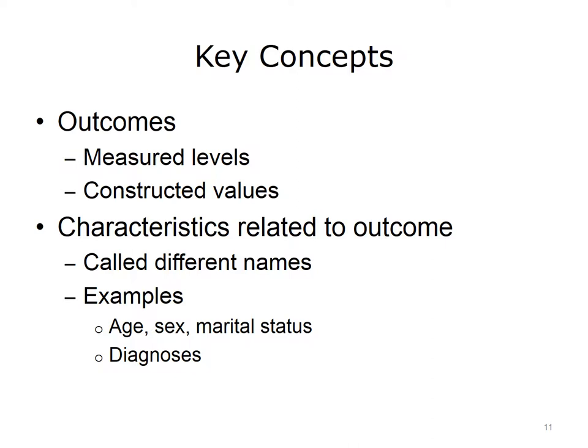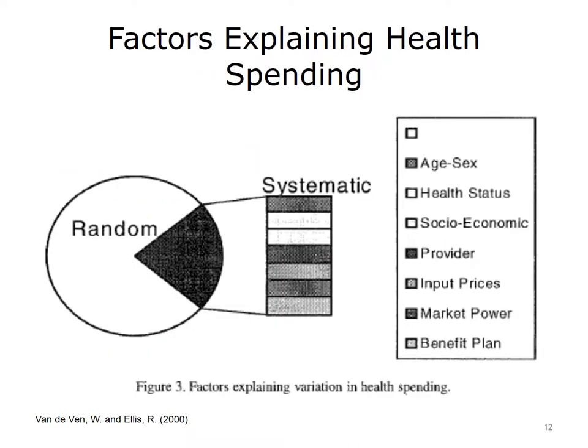The other concept common to both risk adjustment and predictive modeling are characteristics related to the outcome. These can be called factors, predicting variables, or independent variables. Some common examples in healthcare include age, sex, and marital status. Additionally, diagnoses such as heart disease and diabetes represent a rich array of information about a person. For health spending, the diagram from Van de Ven and Ellis' book on risk adjustment suggests that most of the variation in healthcare expenditures is random and cannot be explained by systematic features. The chart lists different types of factors that could be included in risk adjustment, such as age and sex, health status, socioeconomic, provider, input prices, market power, and benefit plan.